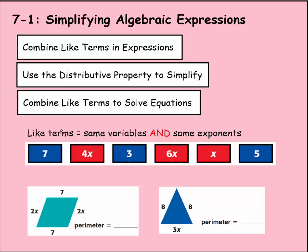Before we begin, something that you should know is that like terms are values that have the same variables and the same exponents. If they're alike, they have to have both.